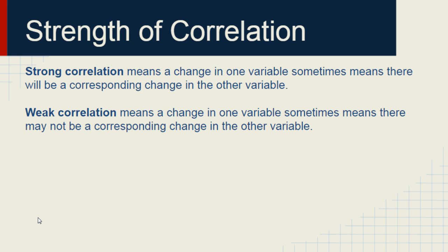You also need to think about the strength of a correlation. Is it strong or weak? If it's a strong correlation, it means that a change in one variable means that there is a nearly one-to-one change in the other variable. Weak correlation means that a change in one variable only results in a tiny little change in the other variable.